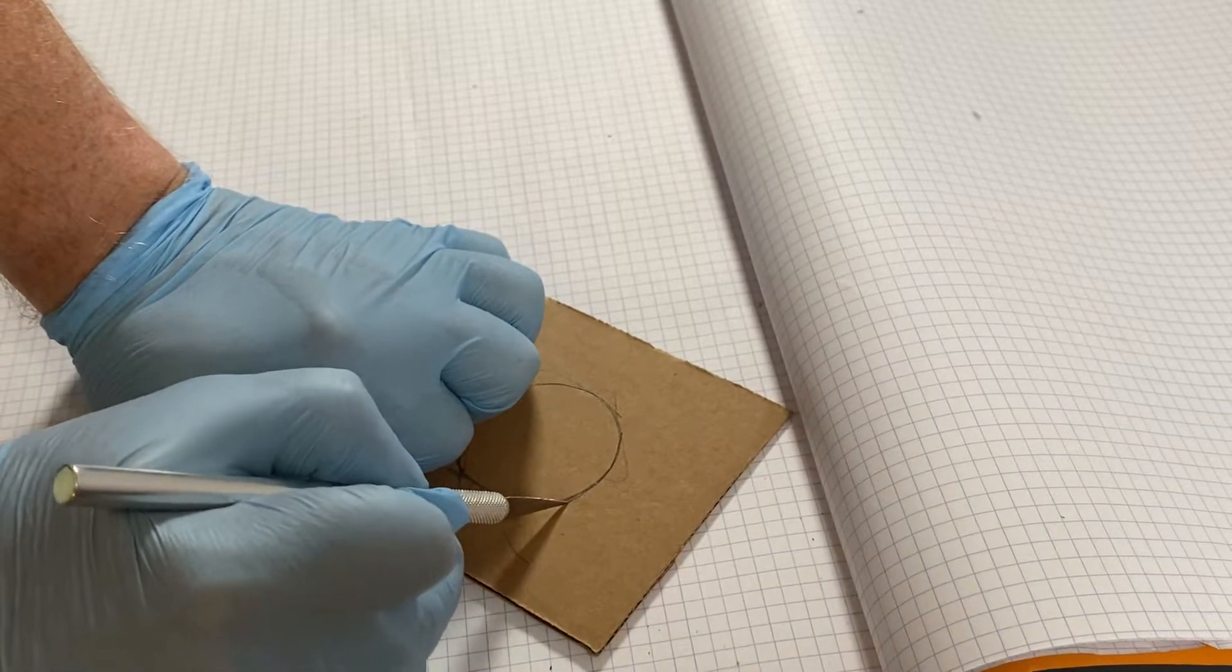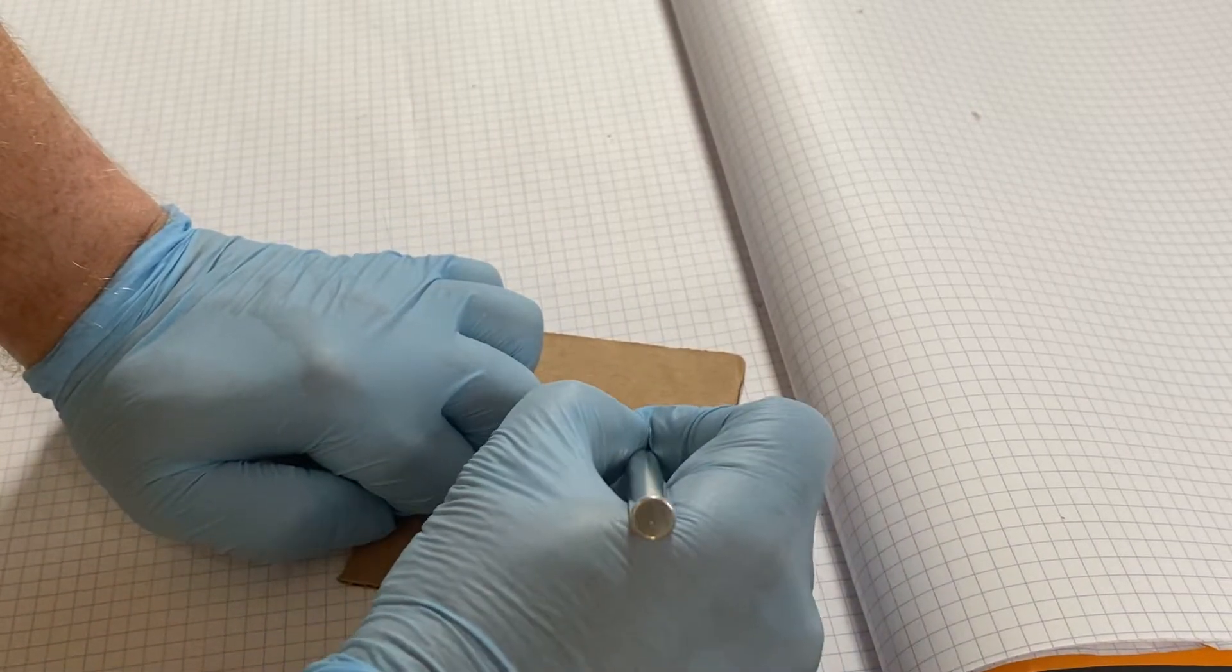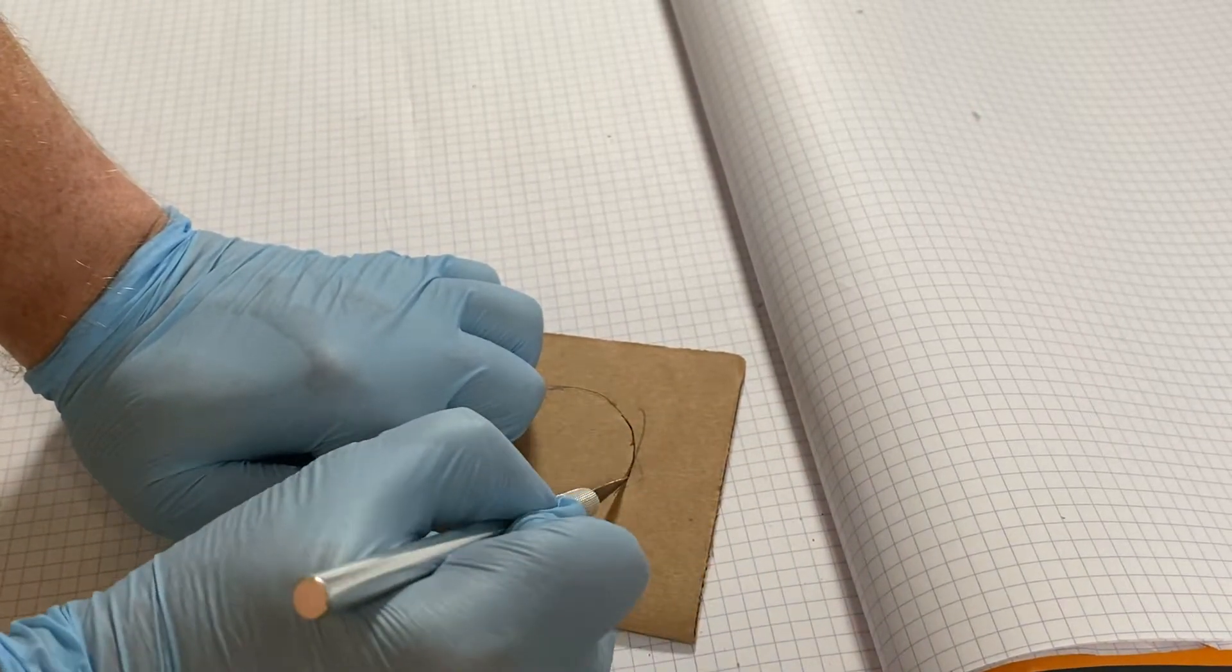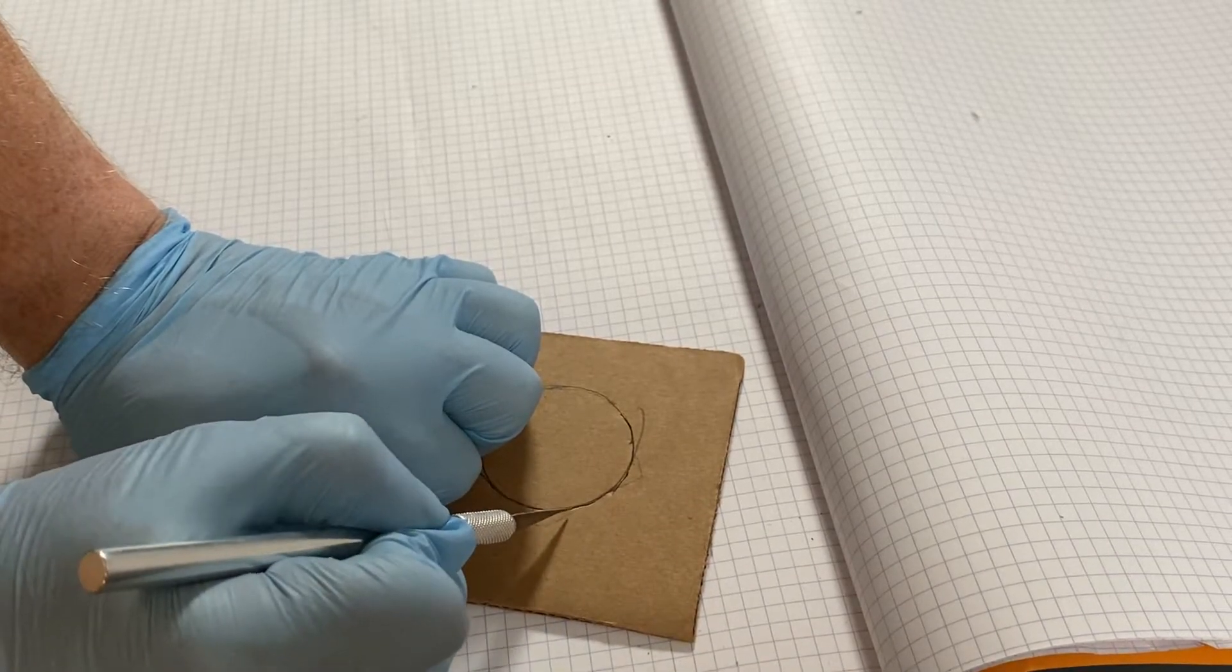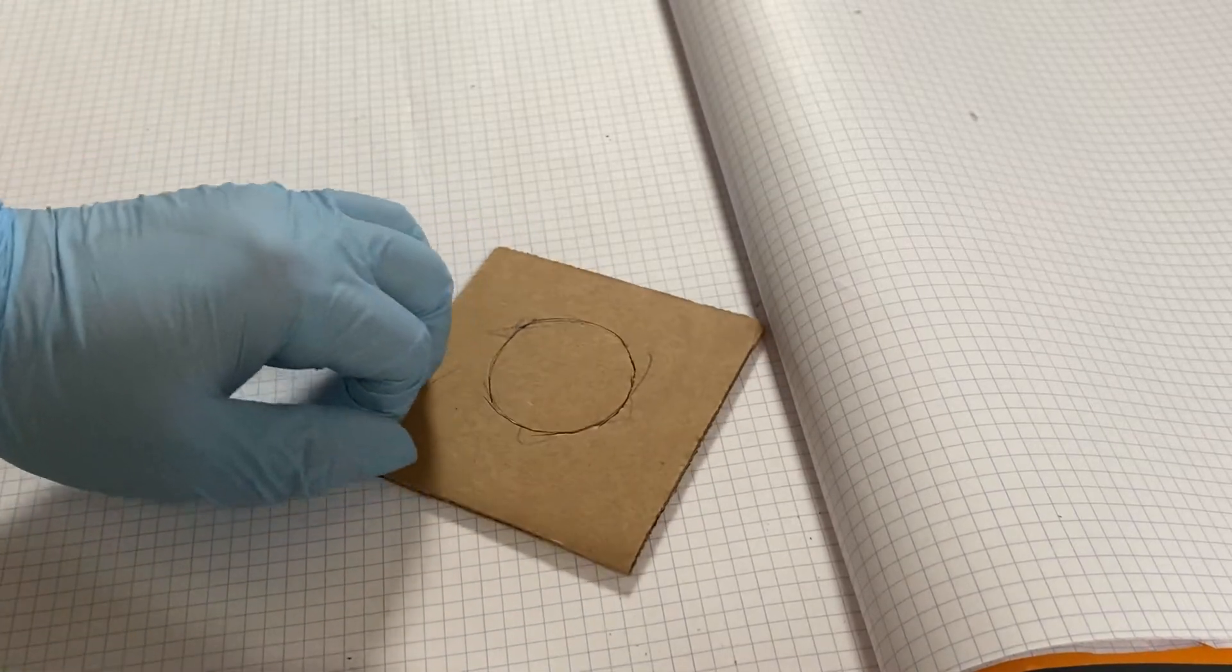Again, this is easy enough. It doesn't matter what your strength level is. It doesn't have to be perfectly matching that line. Just go around until you have it scored all the way around.